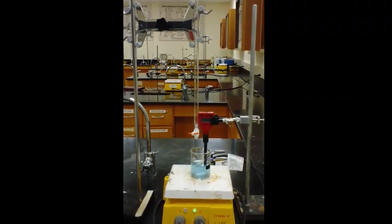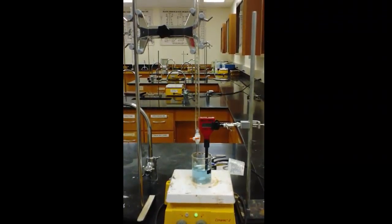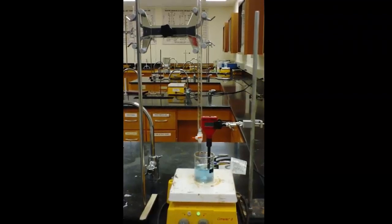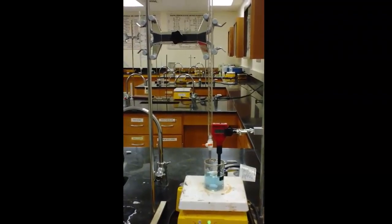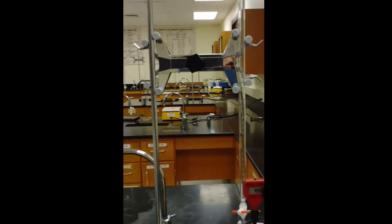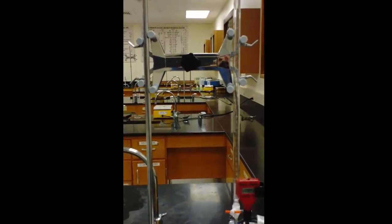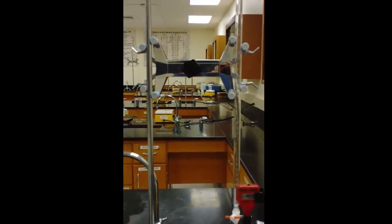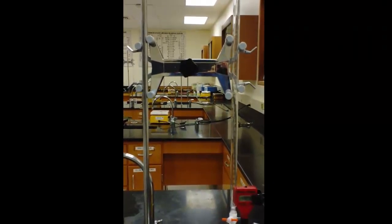For the titration lab, you're going to want your equipment set up like this. If you look at the ringstand that's holding the burette, you will see that the burette clamp is clamped not with the center pole portion, but one side is clamped to the ringstand, the other side is clamped to the burette.